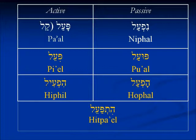The first three forms — pa'al, pi'al, and hif'il — have corresponding passives: nif'al, pu'al, and hof'al. Then there is the hitpa'al, which is considered reflexive. The difference between pa'al and pi'al is a matter of strength. The ideas of learning and teaching are clearly related. In English you can't hear that relationship in the language at all, but in Hebrew you can. The root lamad — lamed, mem, dalet — in the pa'al means 'to learn'; in the pi'al it means 'to teach.'